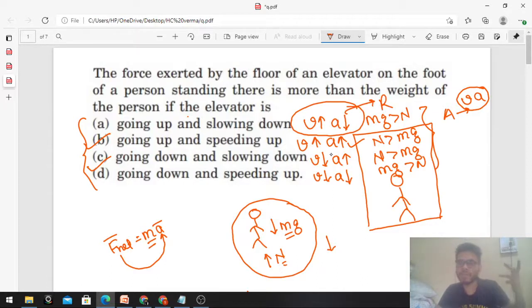First case, velocity and acceleration are in opposite directions. So what is it? Retardation, meaning magnitude of the velocity will decrease. Similarly second case is acceleration, third case is retardation, and fourth one is again acceleration.